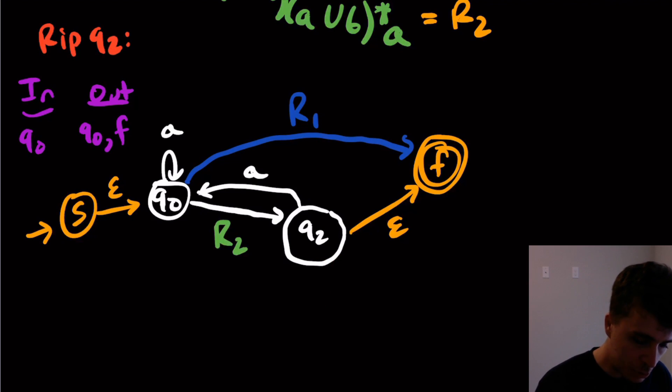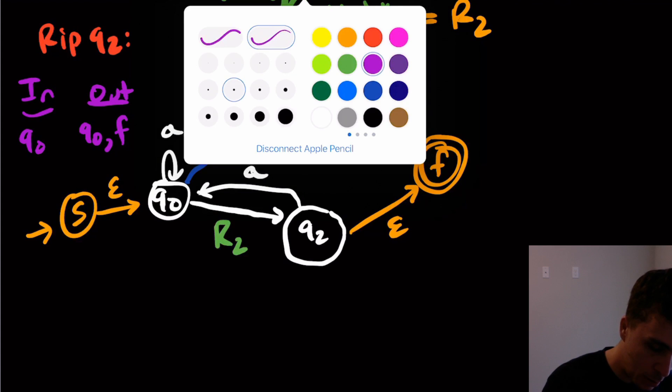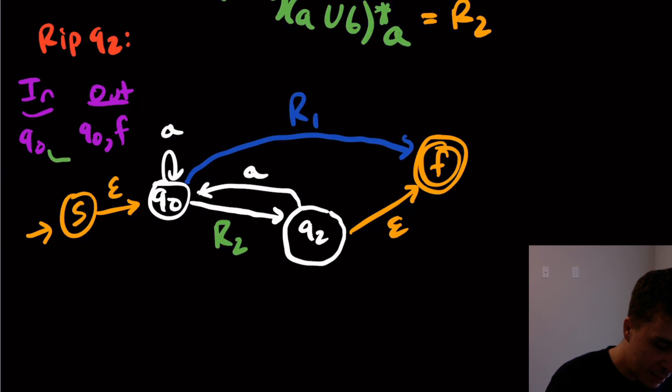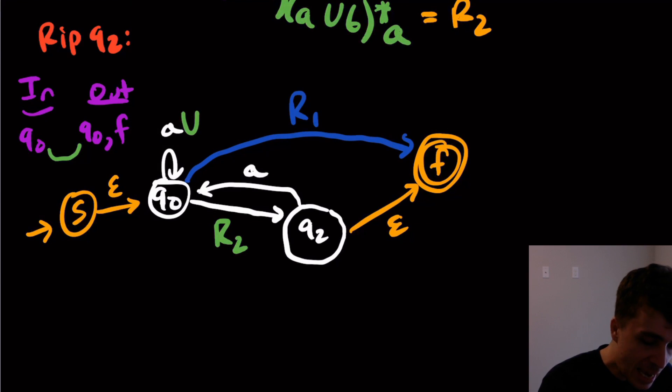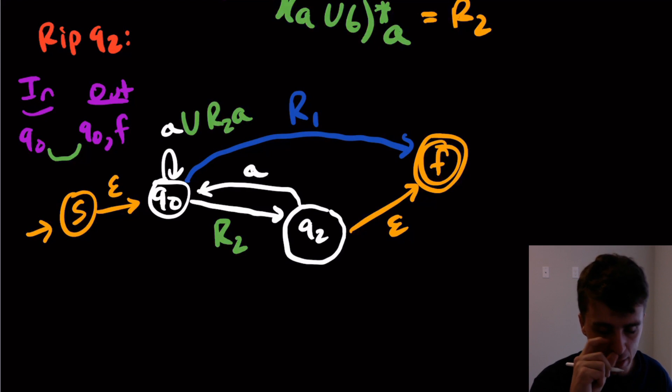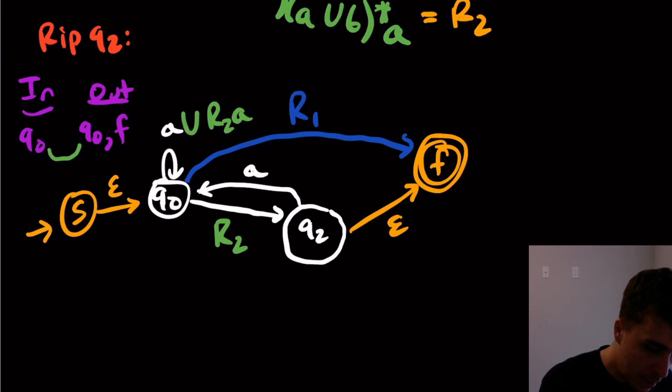So now what we're going to do is process these in pairs, just like before. Let's do in green the Q0 to Q0 pair. So that means that we're going to go R2 concatenated with A, since there's no self loop here. So this self loop right here is going to be A union R2 A. And you could simplify this to be epsilon union R2, whole thing concatenated with A, but I'm just going to leave it like this.